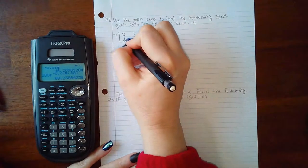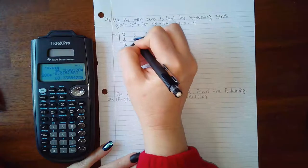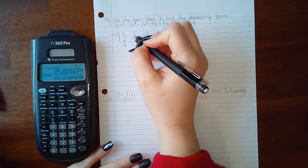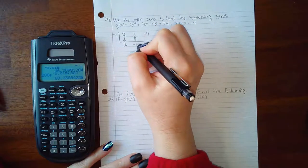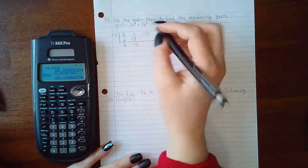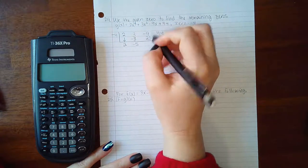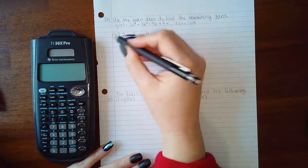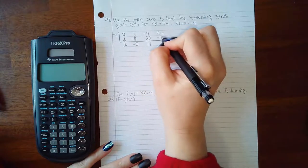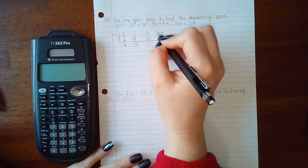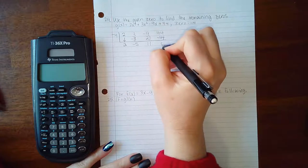Then if we bring down the first number and multiply those together I get negative 8. Then 3 plus negative 8 is negative 5. Negative 4 times negative 5 is 20. Negative 9 plus 20 is 11. Negative 4 times 11 is negative 44.